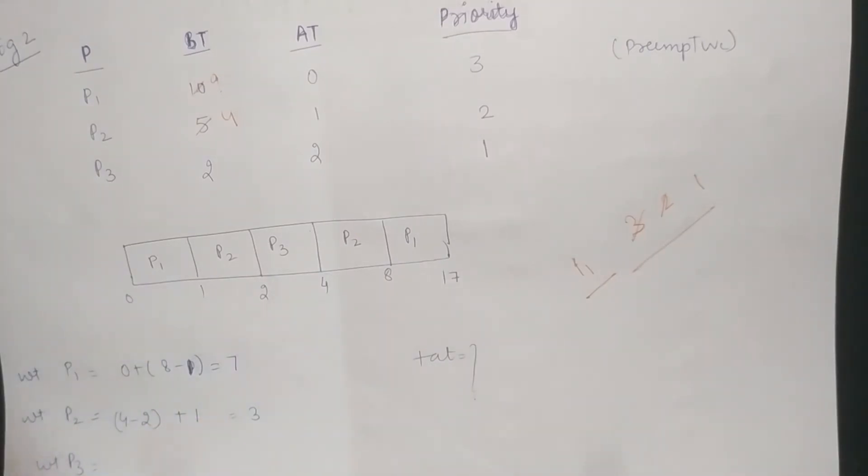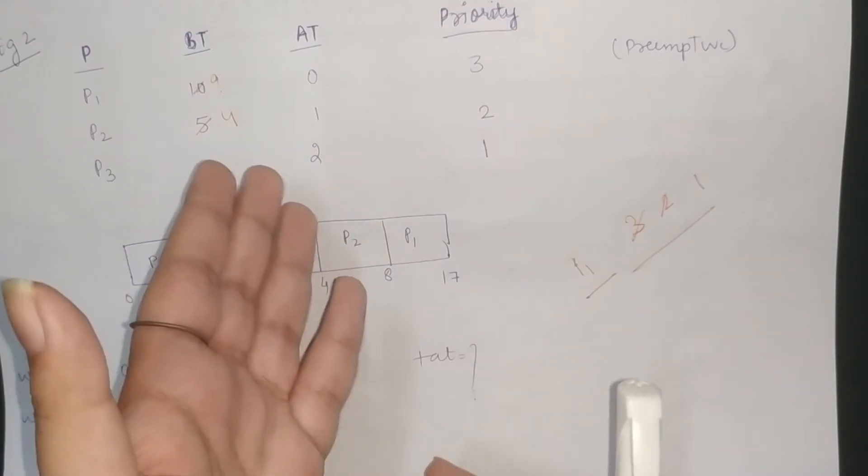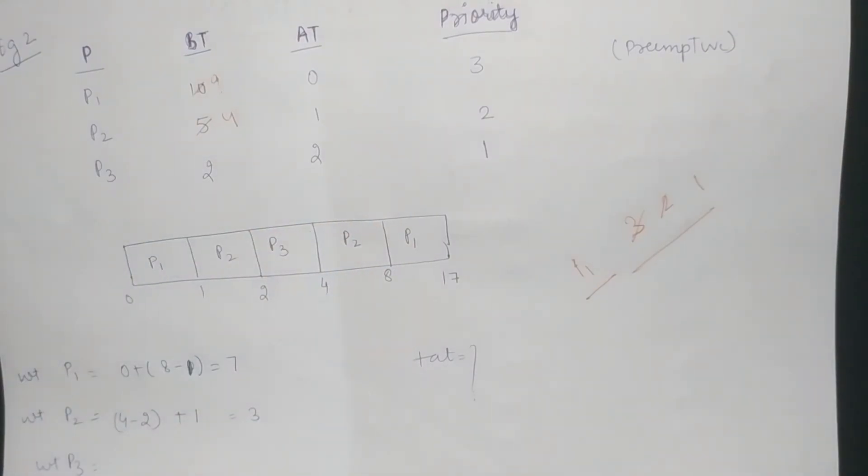So, we will calculate turnaround time and waiting time. Turnaround time is completion time minus the arrival time.